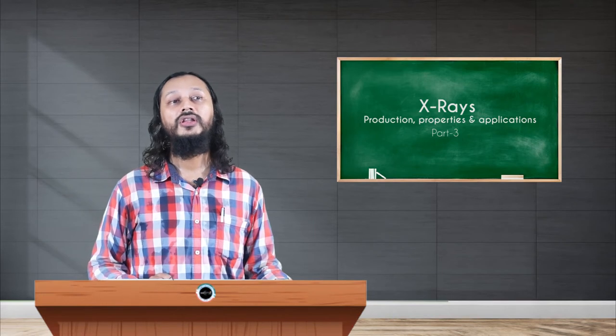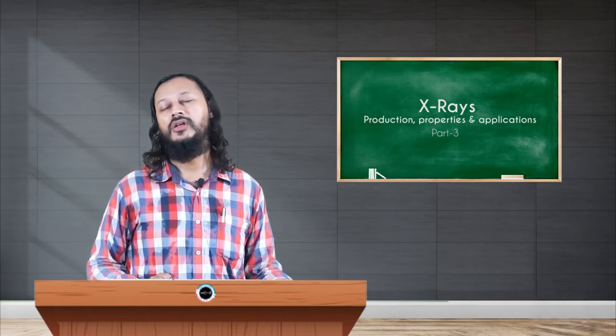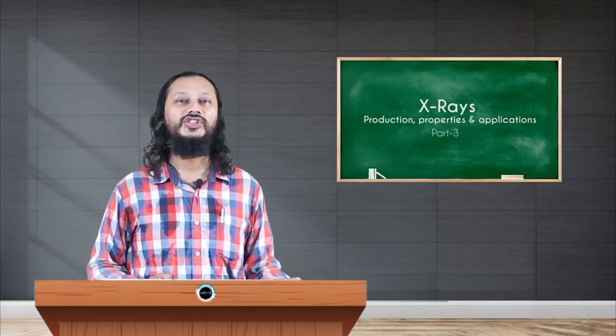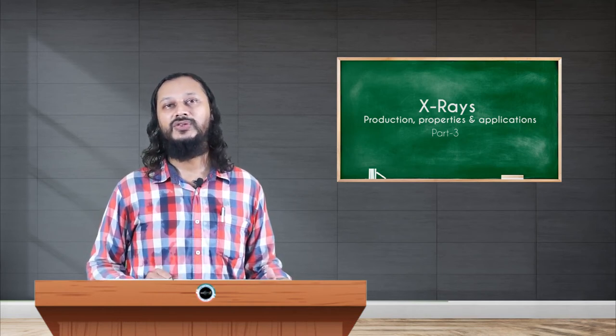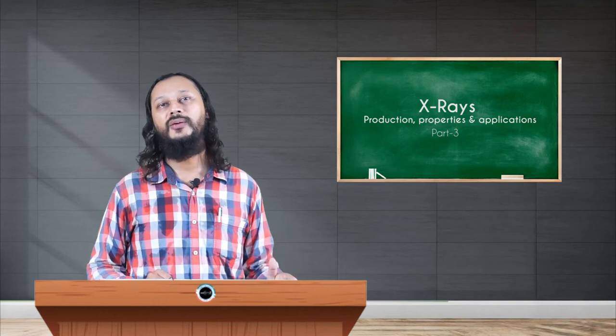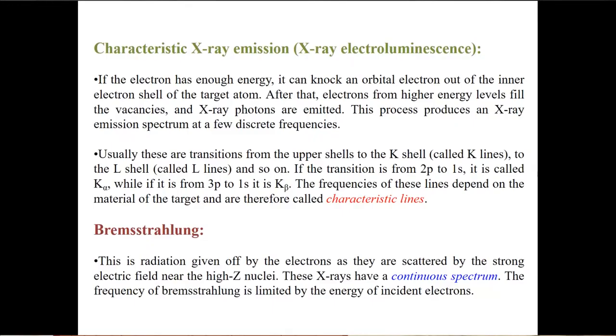The other process is called the Bremsstrahlung process. Bremsstrahlung is a German word, it means breaking radiation. So whenever radiation breaking or slowing down of electrons take place, the emitted radiation is called the Bremsstrahlung radiation. The process is called Bremsstrahlung.